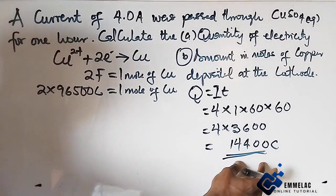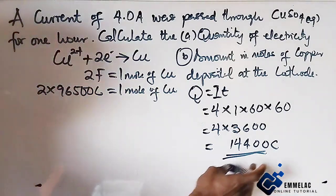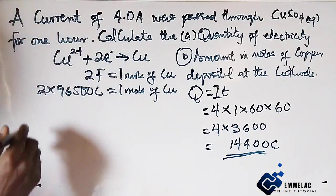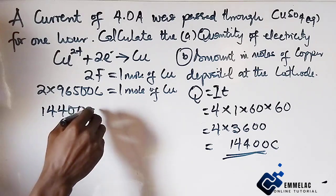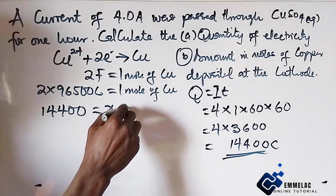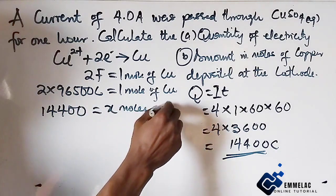Now, how many moles will this quantity of electricity give? So here we have 14,400 will give X moles of copper.